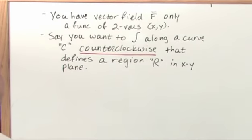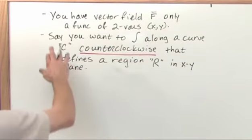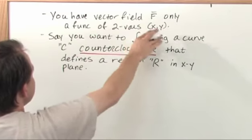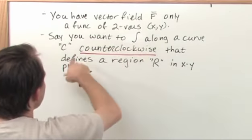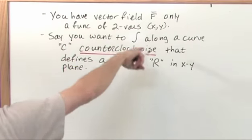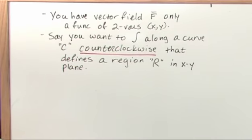So, words, there's a lot of words here. All it says is you have a vector field F. It's a function of only two variables, so it's kind of a simple field that lies in the xy plane. You want to do a path integral along a curve counterclockwise, okay, in that region.